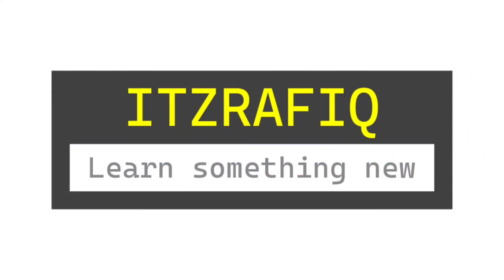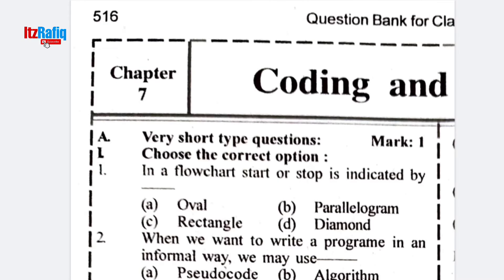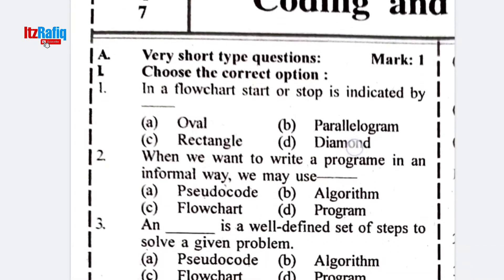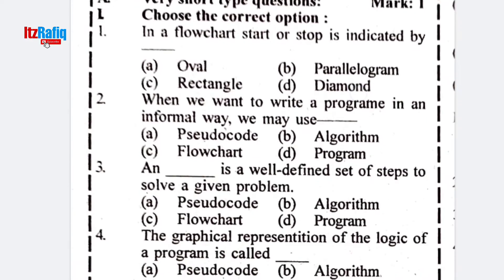Welcome to ITS Traffic. In this video I am going to discuss the questions of Chapter 7: Coding in ITS Importance Class 9 Computer Science. Here are some MCQs. In a flowchart, start or stop is indicated by oval.